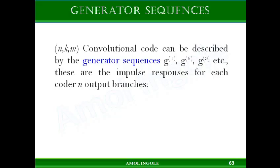The convolution code can be described by generator sequences g1, g2, g3, etc. These are the impulse responses for each n output branches in the convolution encoder.